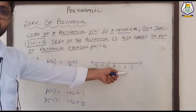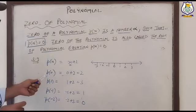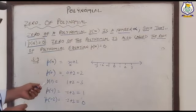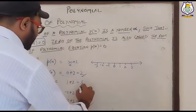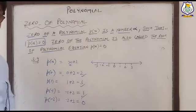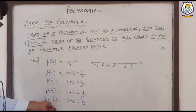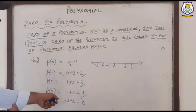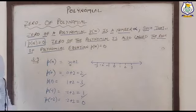We can put any value from the number line in place of variable x. So p(0) = 2, p(1) = 3 — these are values of the polynomial. But the particular number that gives the polynomial an answer of zero: when we put minus two, minus two plus two gives zero. So the value that makes the polynomial equal to zero is known as the zero of the polynomial.